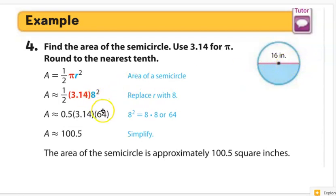So 8 squared ends up being 64. The rest of our numbers you can use a decimal 0.5 for the 1 half. And then you multiply it all out, it simplifies to about 100.5. So the area of the semicircle is approximately 100.5 square inches.